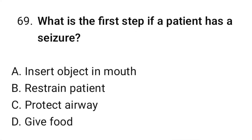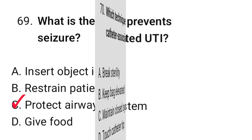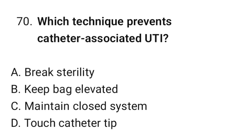Question number 69: What is the priority if a patient has a seizure? The correct option is C: Protect airway. Question number 70: Which technique prevents catheter-associated UTI? The correct option is C: Maintain closed system.